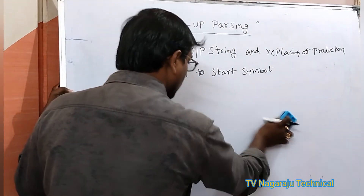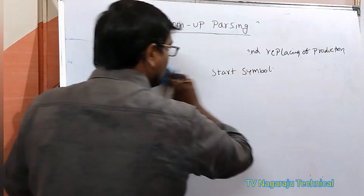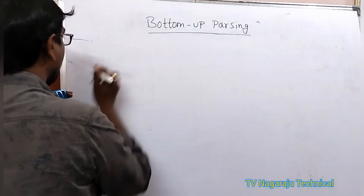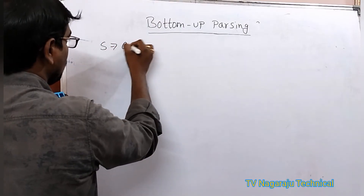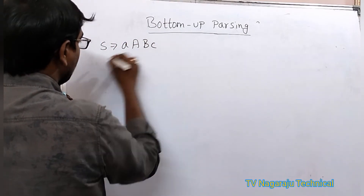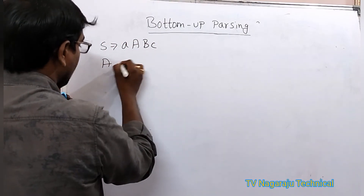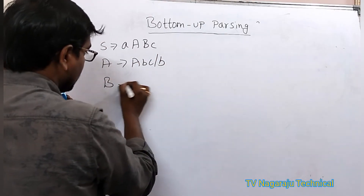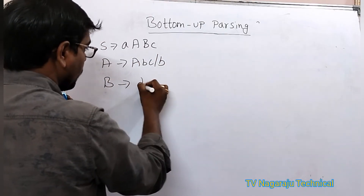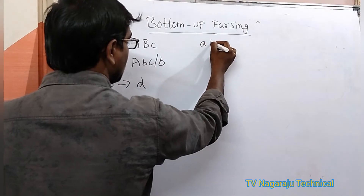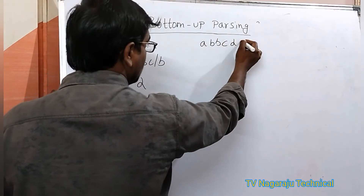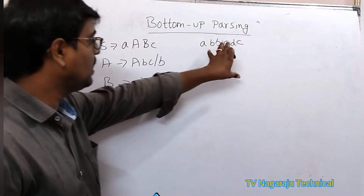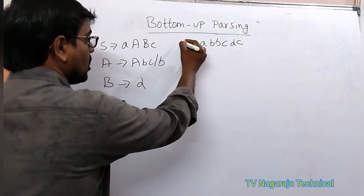I will explain one example — it is very easy to understand. For example: S tends to A, A, B, C; A tends to A, B, C, R, B; B tends to D. My input string is A, B, B, C, D, C. Assume this is the given grammar and this is the input string.